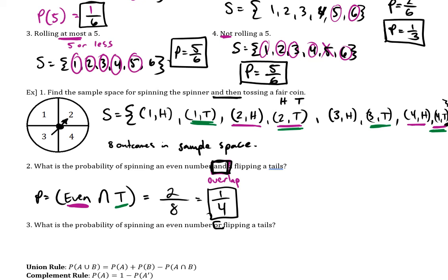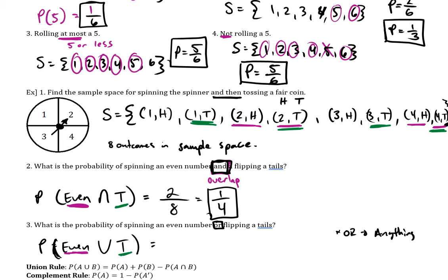What is the probability of spinning an even number or flipping tails? 'Or' is the union symbol. Using the same color markings, 'or' means anything that is marked counts. Going through and counting everything marked: one, two, three, four, five, six different things. Six out of eight reduces to three out of four.